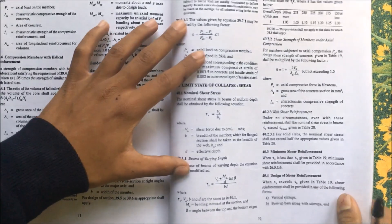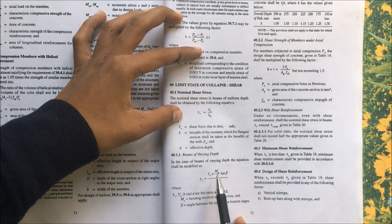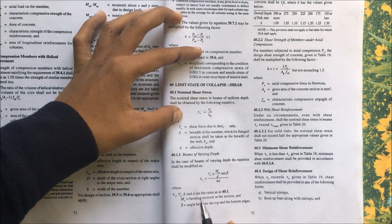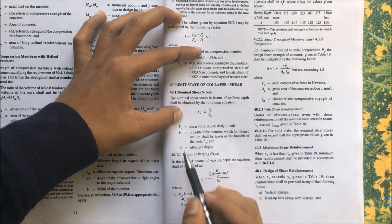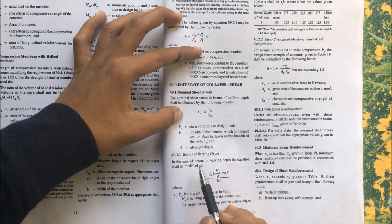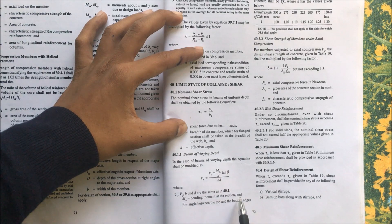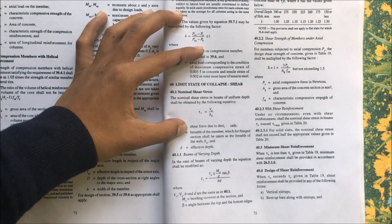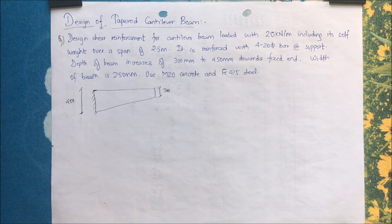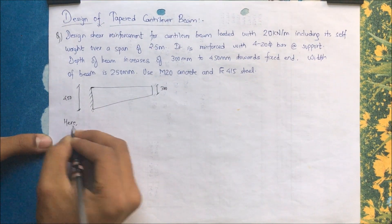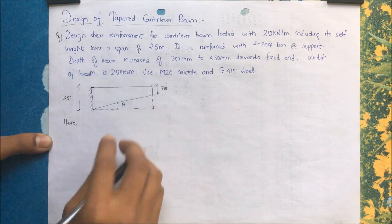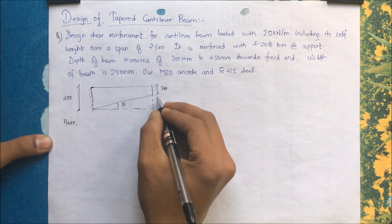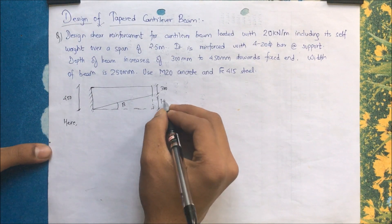From clause 40.1.1 of the code, for a beam of varying depth, V is the shear force due to the design load, M_u is the bending moment at the section, and β is the angle of taper. We will find β from the right-angle triangle formed by the beam geometry.